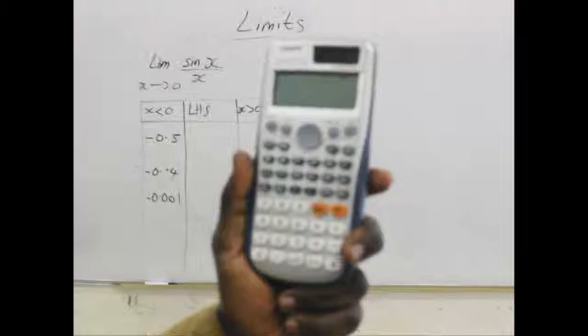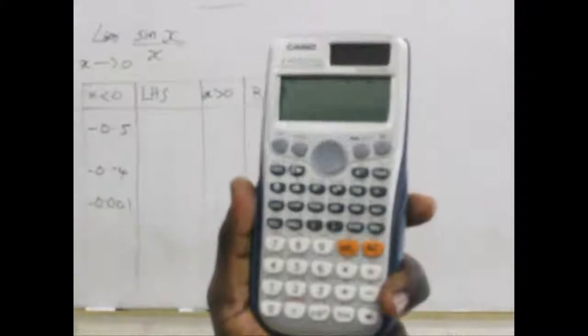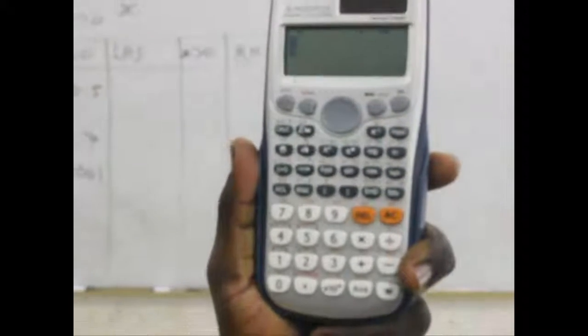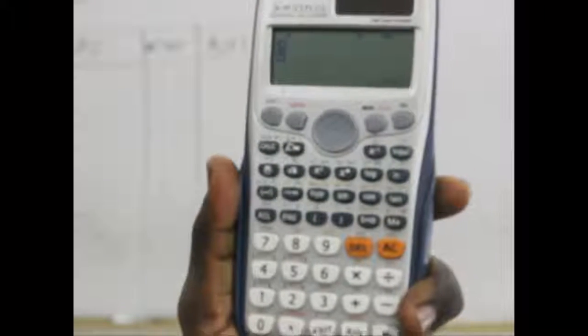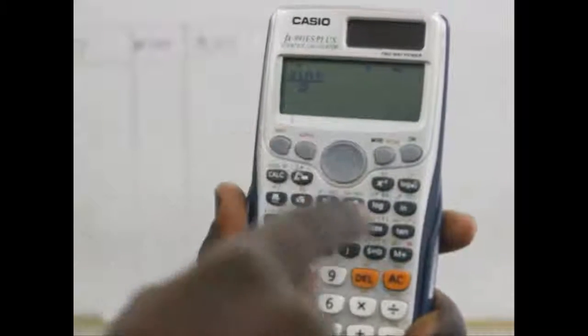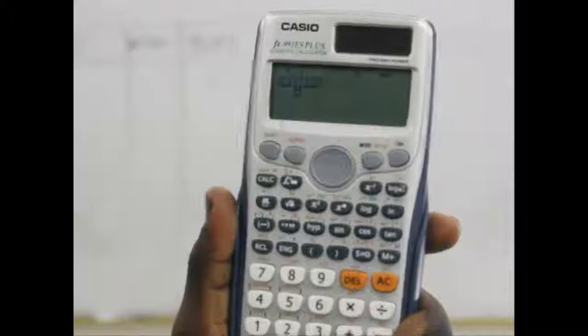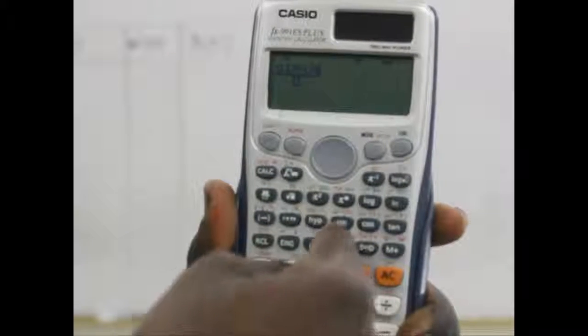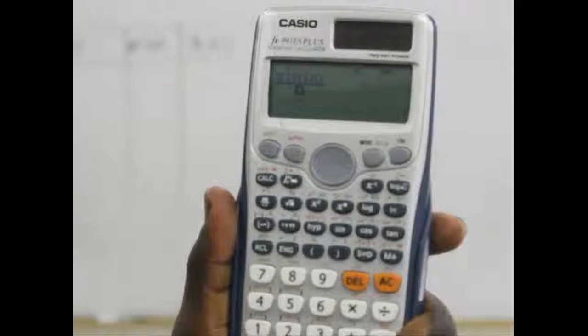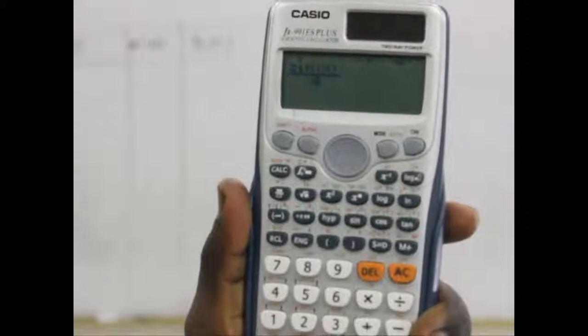We start by first taking the fractional value since it is in fraction form. Press the fraction key and you get your fractions. At the upper part you have sine x. Press sine, a bracket opens, then you take alpha and x. Since alpha and x are the same color, we use the alpha to call out the x, and after that use the same button to close the bracket.